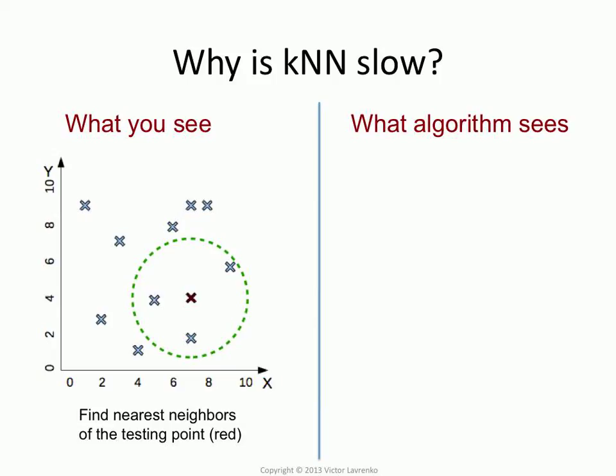When you look at this picture and you know that this is the testing point, and you need to find three nearest neighbors, you're not going to compute the distance between that guy and that guy, because you know what the nearest neighbors are. The reason you know is because you have this awesome thing called the visual cortex, which is great at picking out things like proximity, because we needed it when we were running around chasing dinosaurs — or they were chasing us. So you can instantly pick out nearest neighbors from a two- or three-dimensional space. This is what you see.